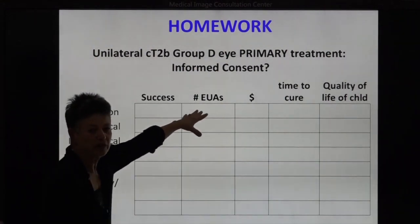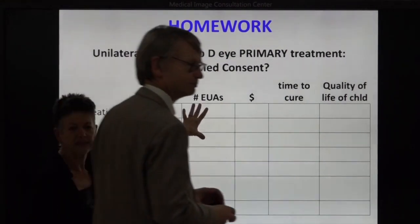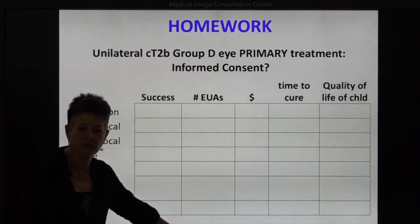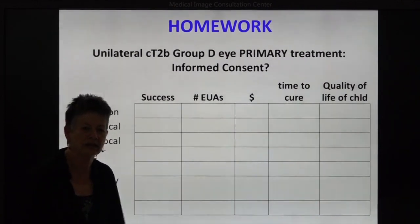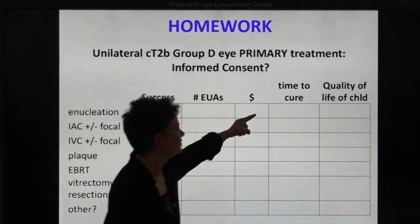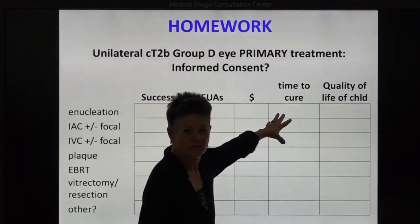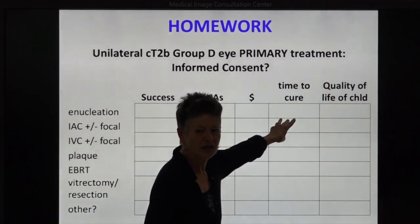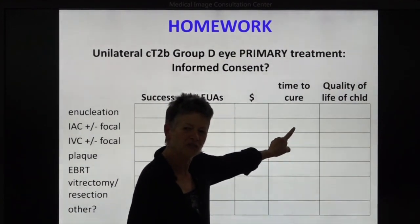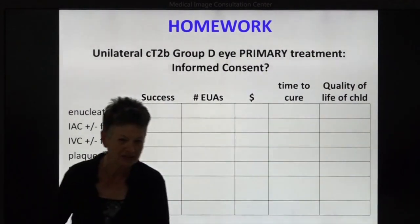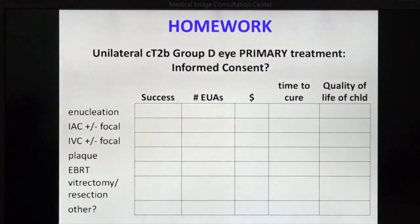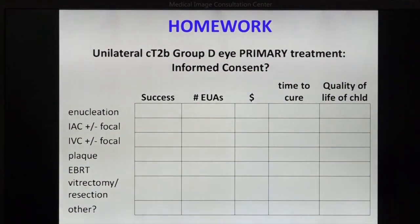The number of examinations under anesthetic that the child would have to undergo to complete treatment, and then the amount of time — how many months or years — that would achieve the outcome. And what do you want to put in for quality of life of the child?